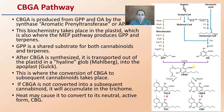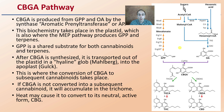Now that CBGA is produced, you can see here it is formed from GPP and OA by the synthesis of aromatic pyrene through transferase, or just AP. This biochemistry takes place in the plastid, which is also where the MEP pathway produces the GPP and terpenes. So we're seeing some overlap to other plant processes — GPP is a shared substance in both cannabinoids as well as terpenes, showing some overlap in these pathways within the plant.